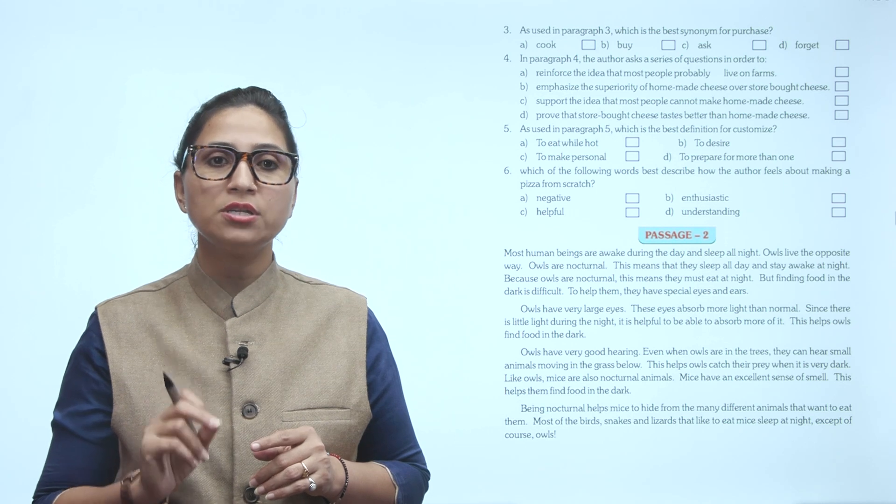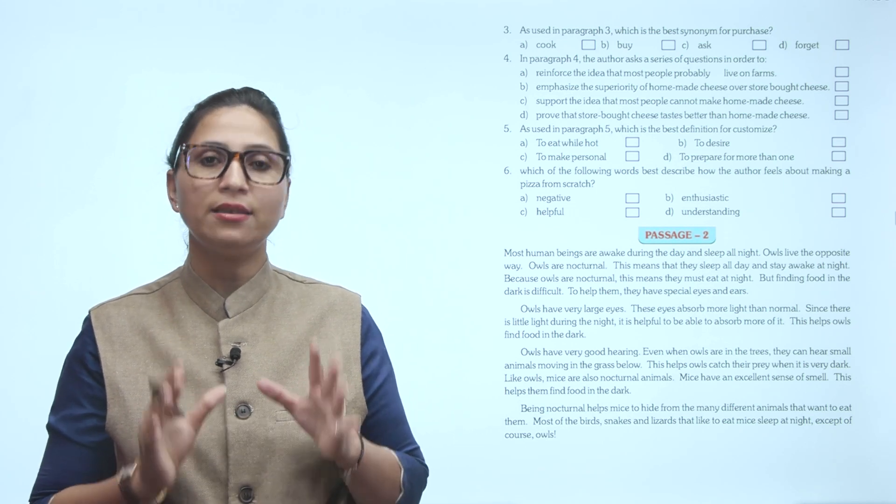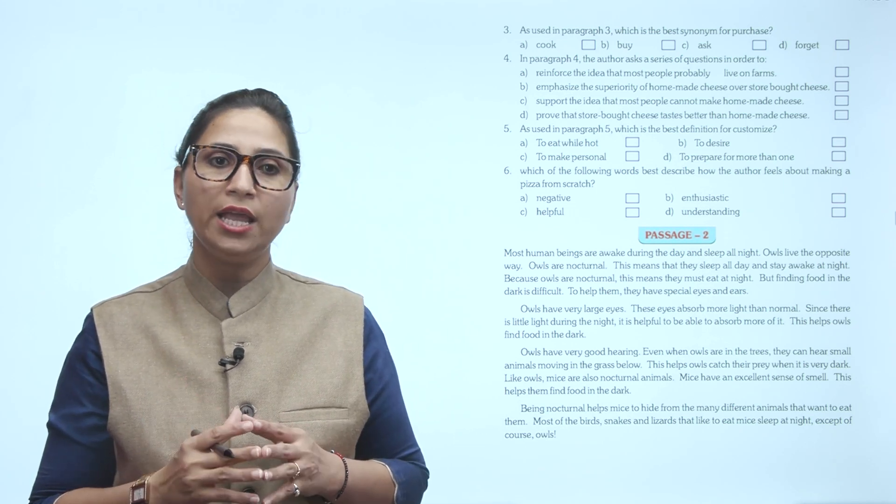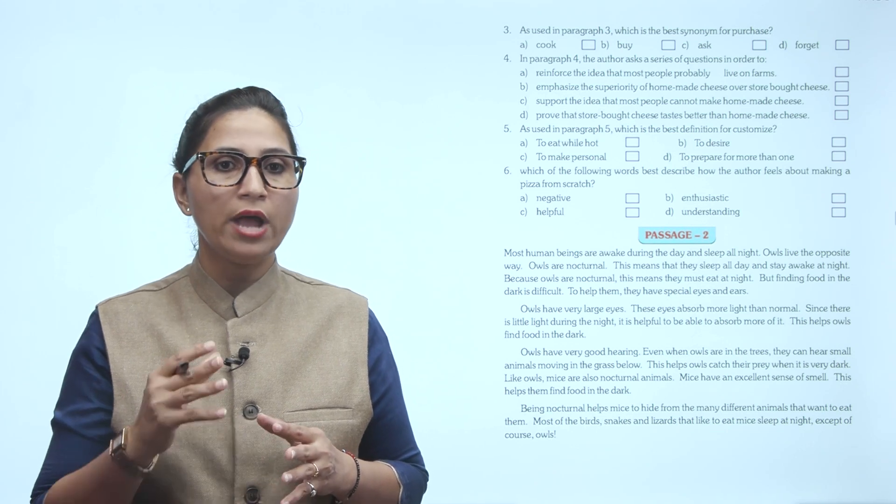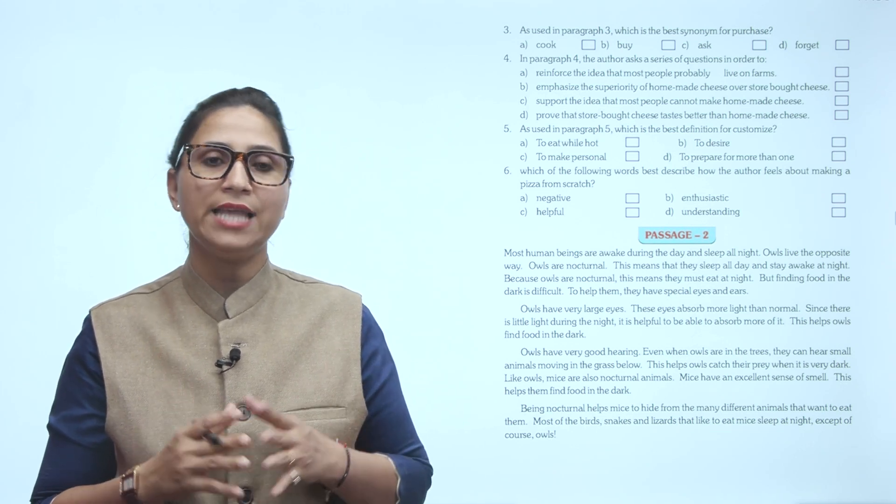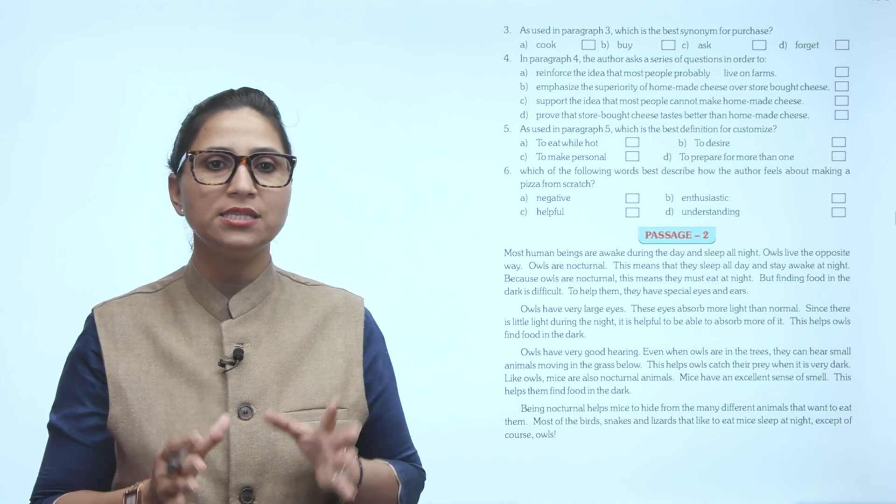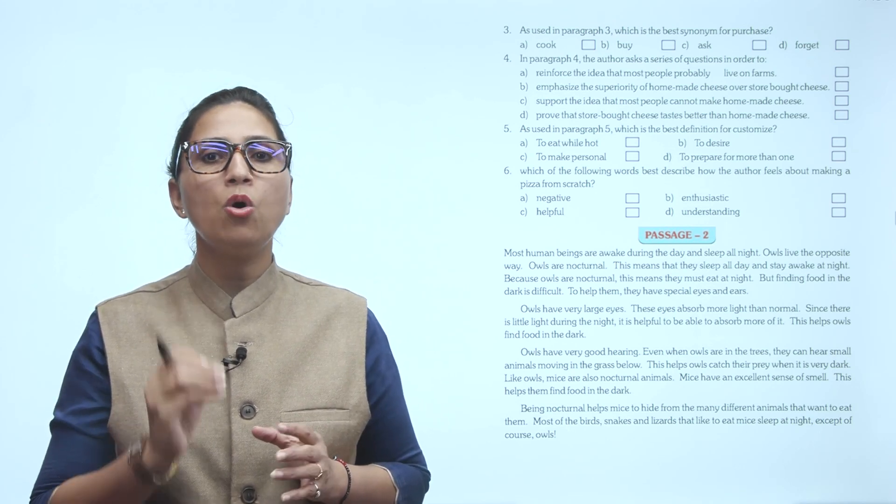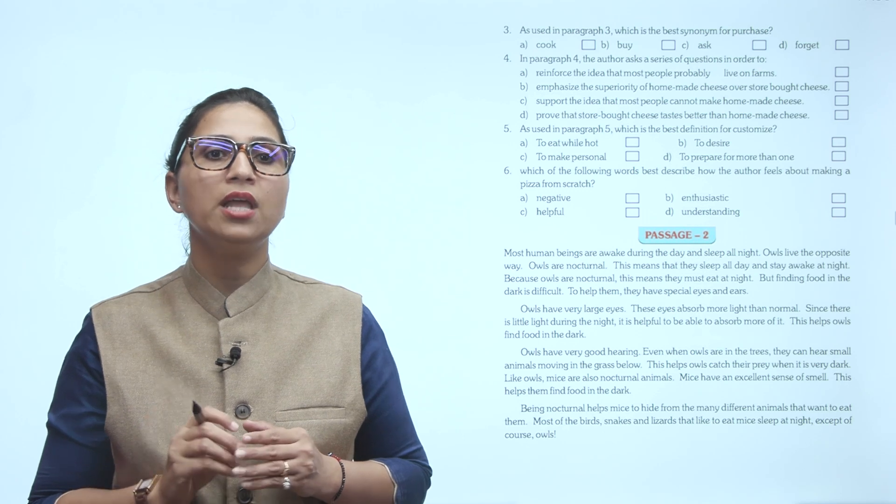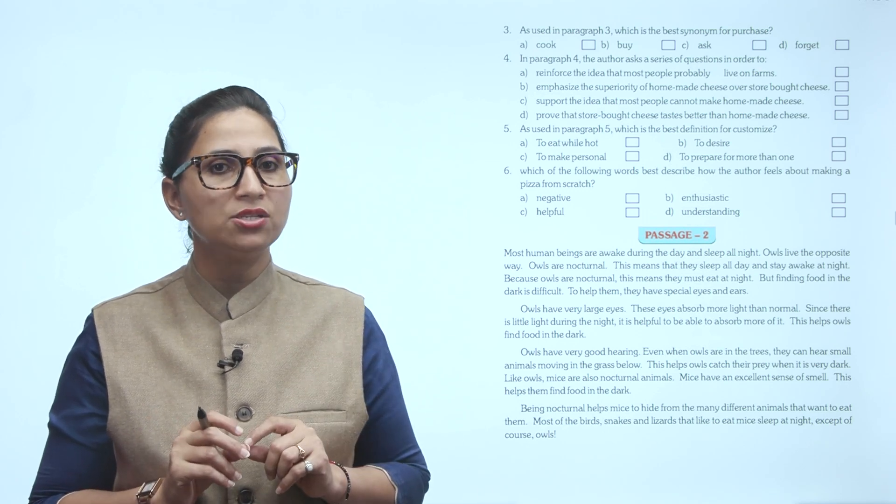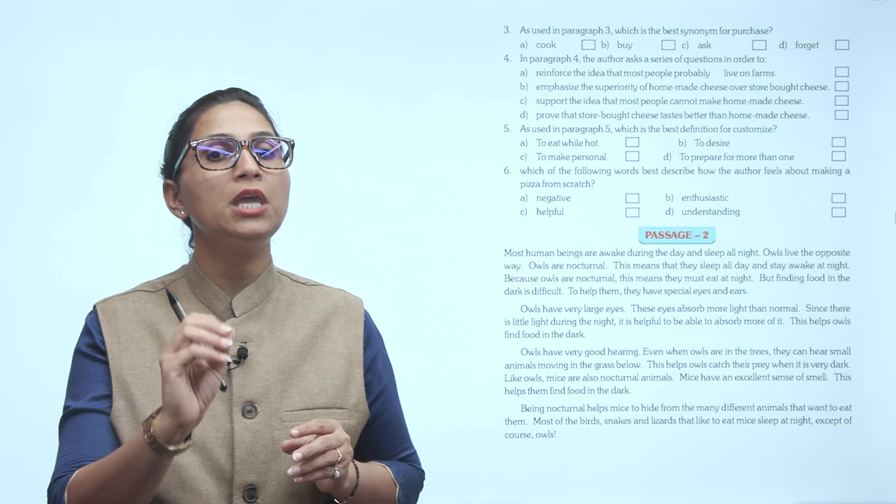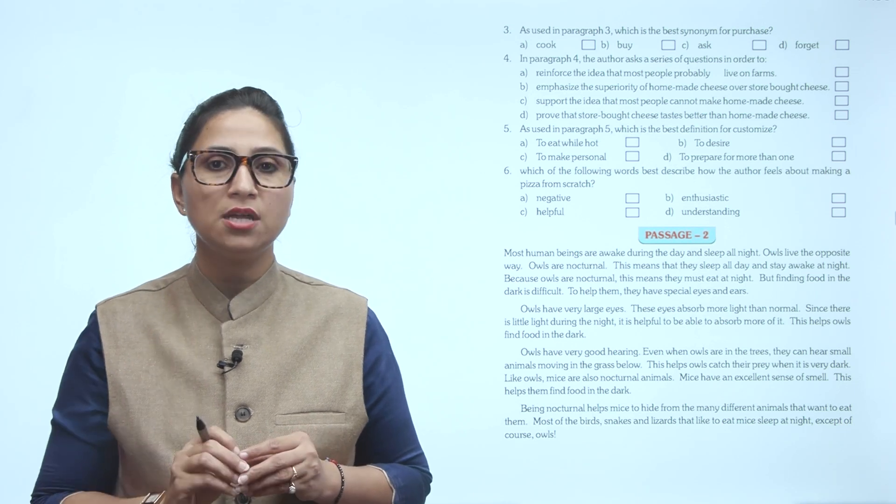Because owls are nocturnal, they must eat at night. But finding food in the dark is difficult. To help them, they have special eyes and ears. Owls have very large eyes. These eyes absorb more light than normal. Since there is little light during the night, it is helpful to be able to absorb more of it. This helps owls find food in the dark.